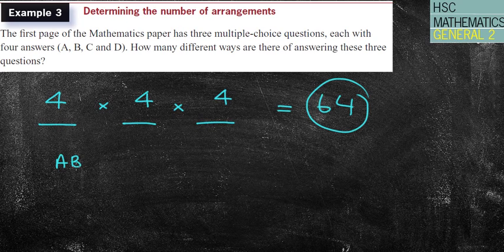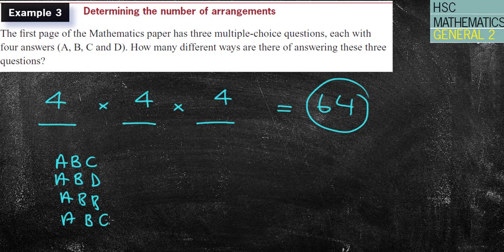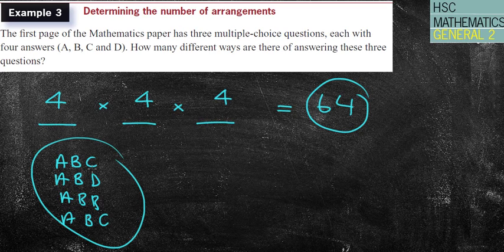But think about it this way. You could have things like A, B, and C, A, B, and D, A, B, and B, A, B, and Z. And you could go the whole way through that. It's going to take a really long time. So let's look at the next question.